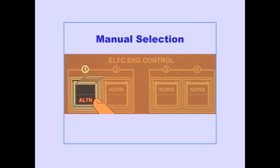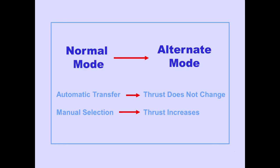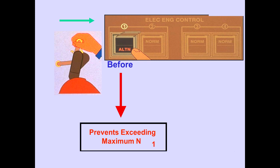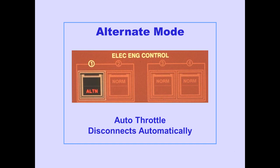Pushing the EEC mode switch manually selects the alternate mode. When the EEC automatically transfers control from normal mode to alternate mode, thrust does not change. However, when the alternate mode is manually selected, thrust increases. Moving the thrust levers aft before manually selecting the alternate mode prevents exceeding maximum N1. If control for any EEC transfers to the alternate mode, the auto-throttle disconnects automatically.